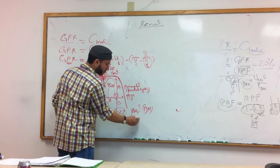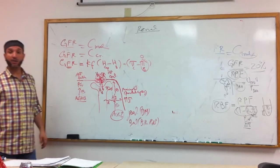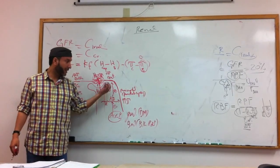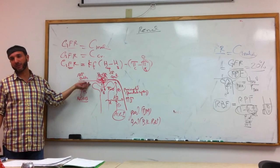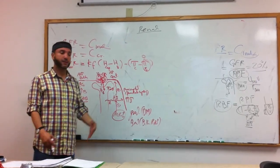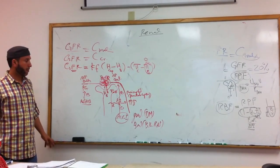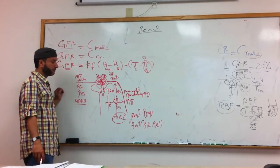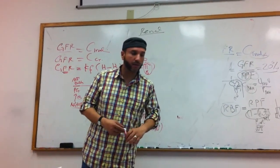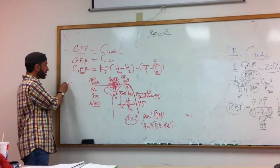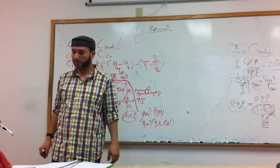However, ACE inhibitors are contraindicated in bilateral renal artery stenosis. By dilating the efferent, you are reducing filtration, and these patients already have less blood supply through the efferent. That's why ACE inhibitors are contraindicated in severe bilateral renal artery stenosis. There are examples on the first slide about changes in the filtration fraction with different scenarios — you can see the table there.